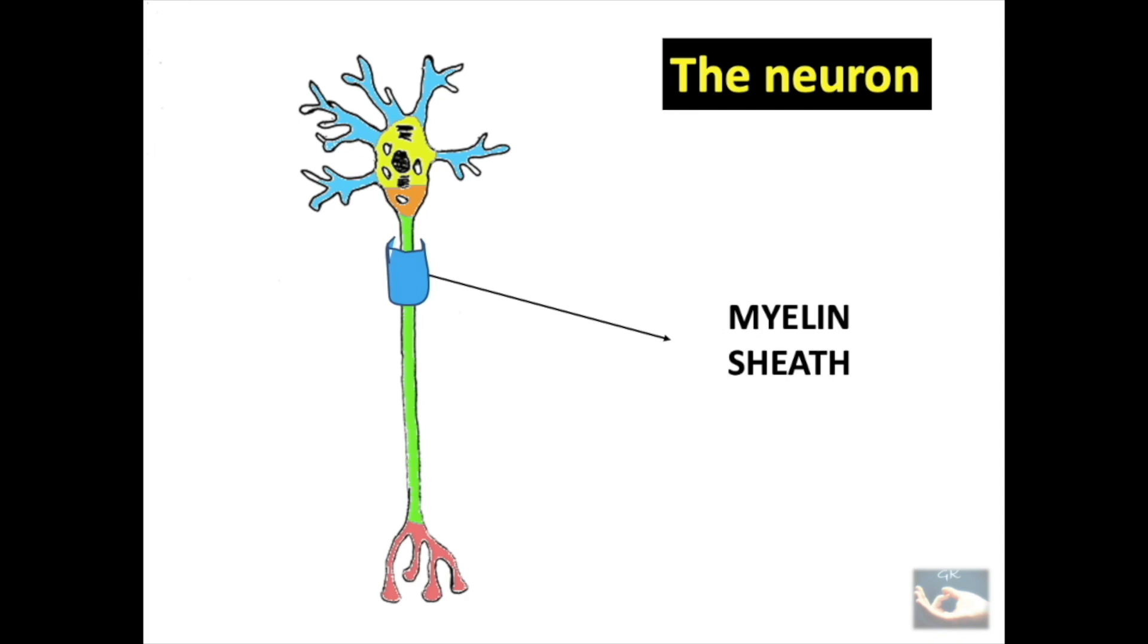This sheath is not a continuous sheet that extends through the entire length of the axon. It is found in intervals. So, there are multiple myelin sheaths along the course of the axon, leaving small gaps in between them.